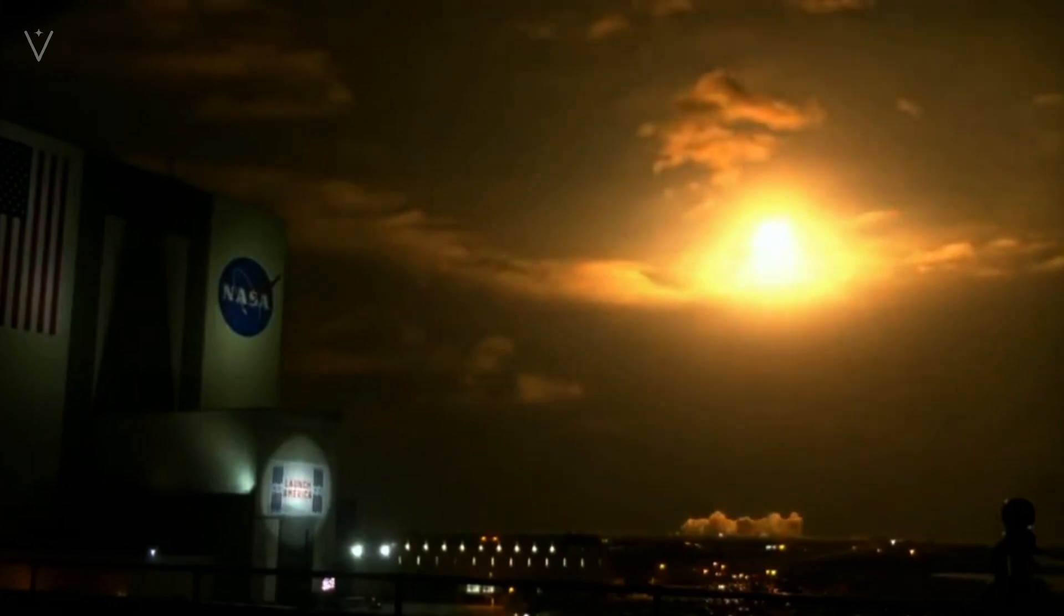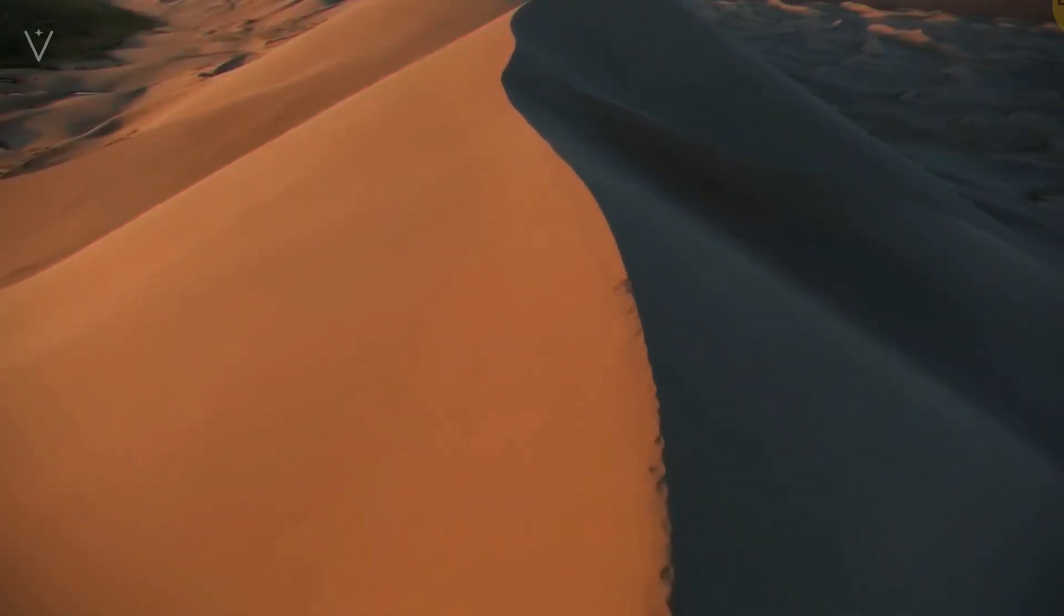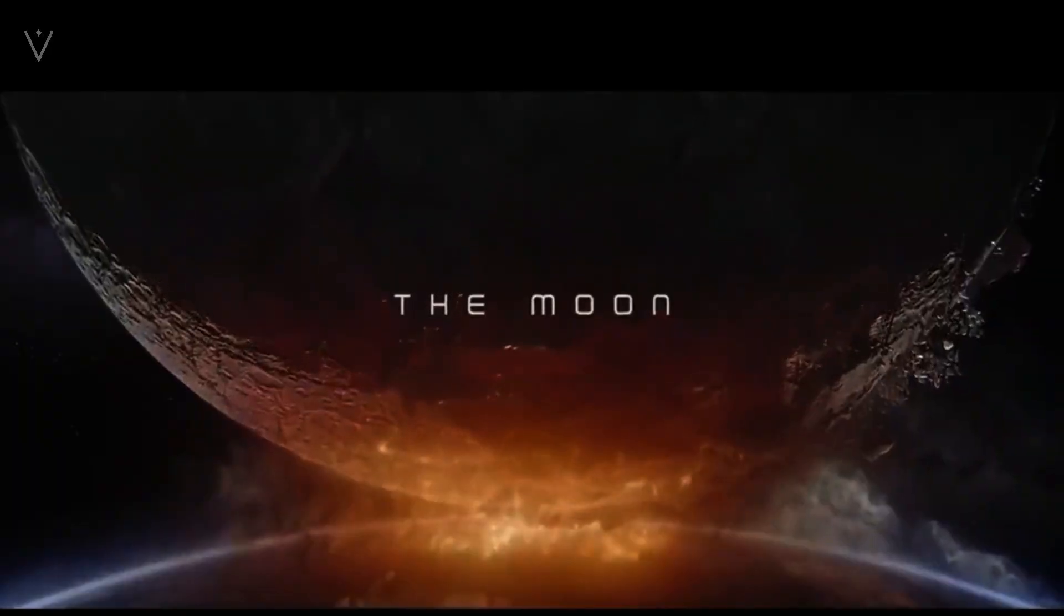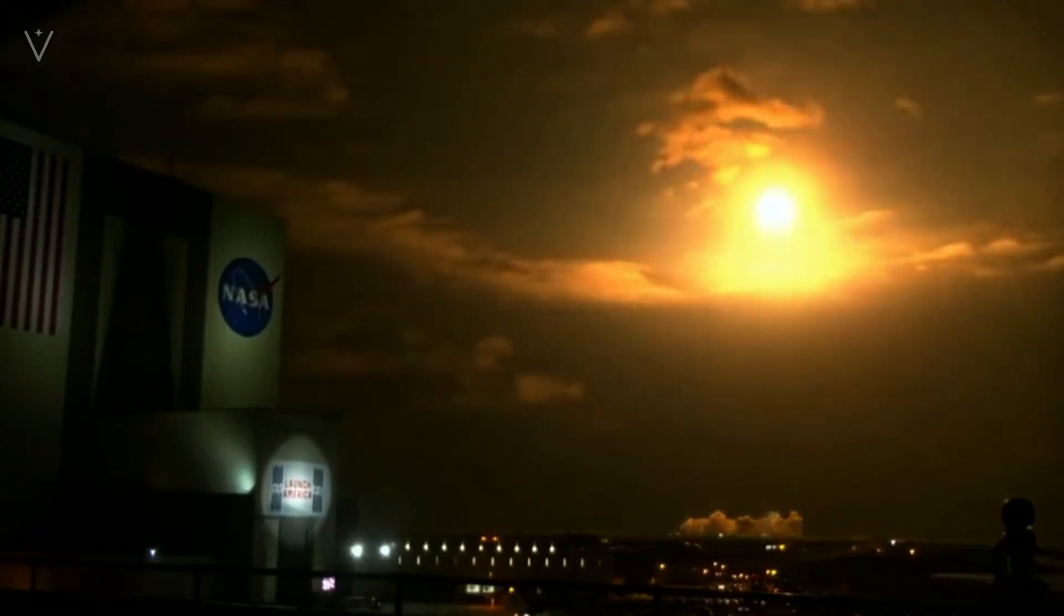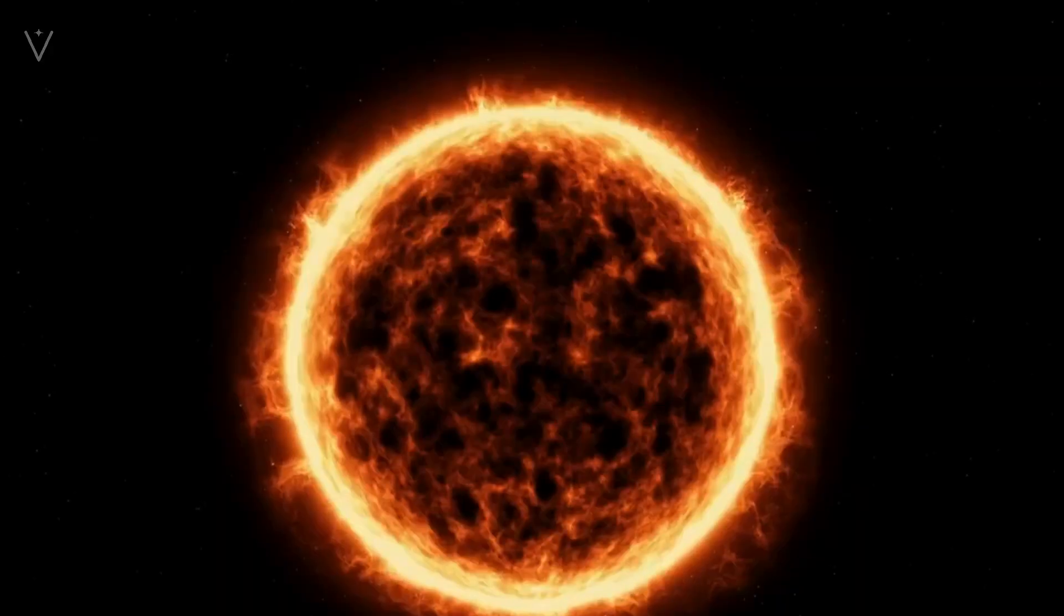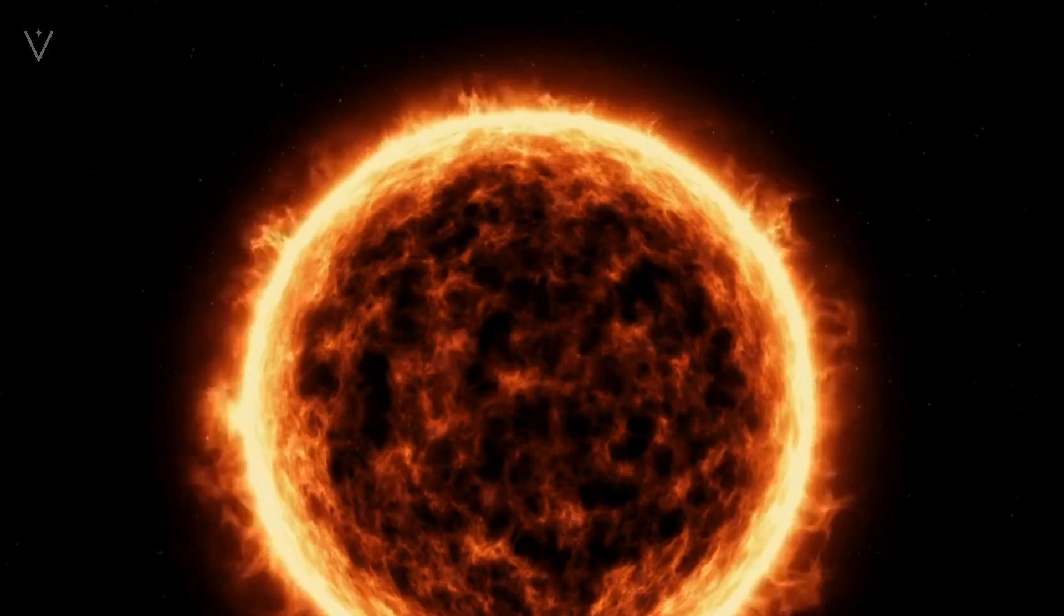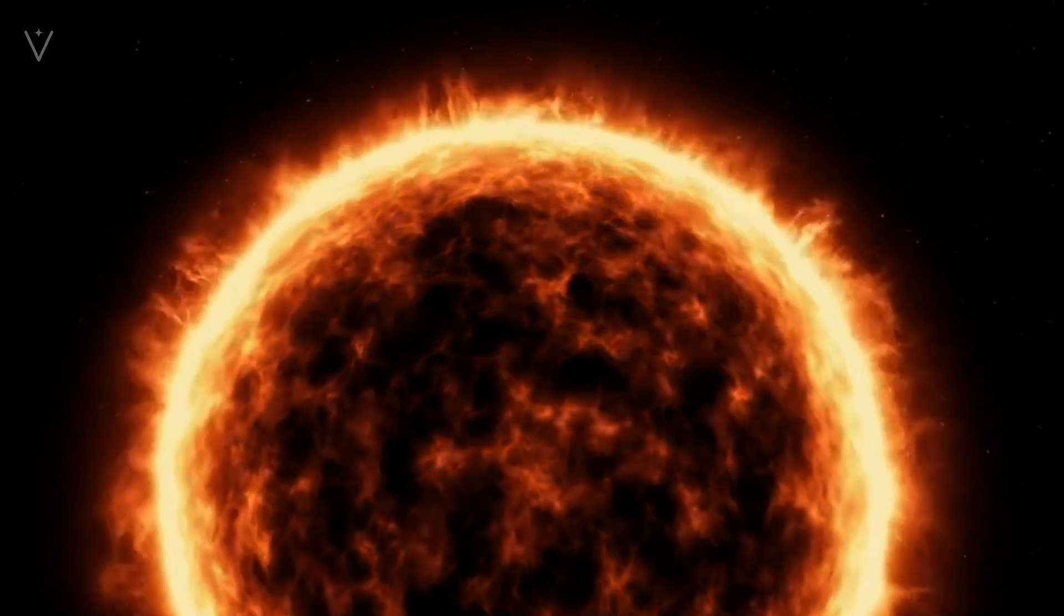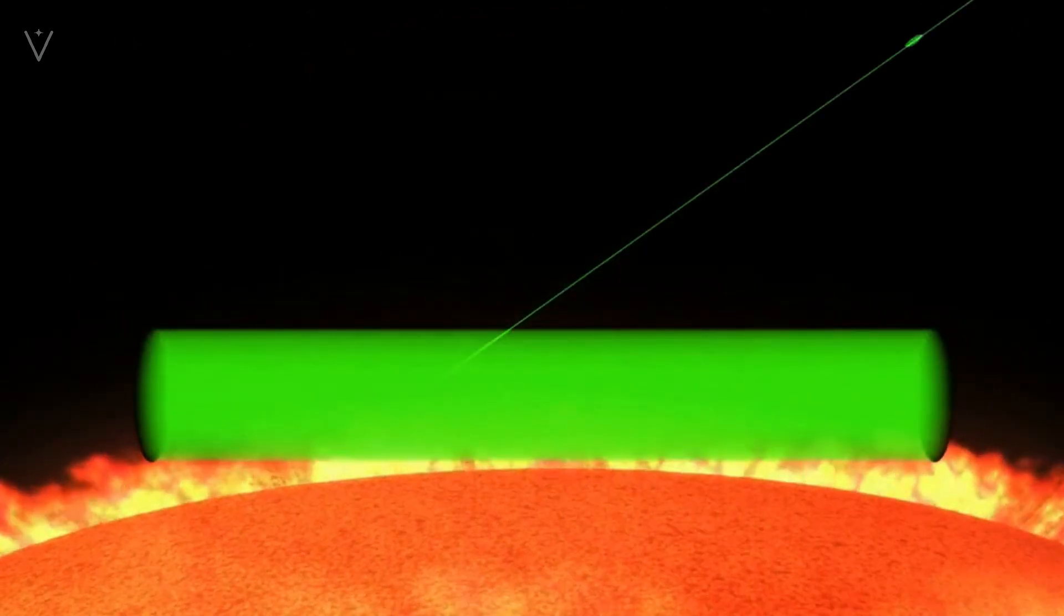Pouring 4,000 trillion tons of water onto the Sun wouldn't extinguish it. Instead, it would trigger a series of complex and violent changes, eventually transforming the Sun into a larger, hotter, brighter, but shorter-lived star. If we extend this thought experiment further, assuming an even larger volume of water is added, the Sun's mass could increase to over eight times its original mass, resulting in extraordinary and extreme changes.